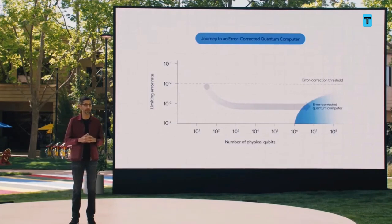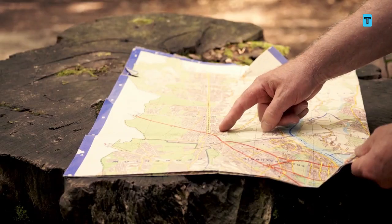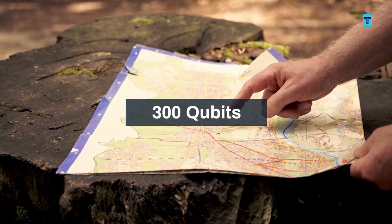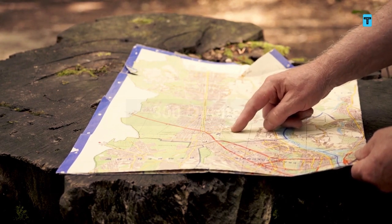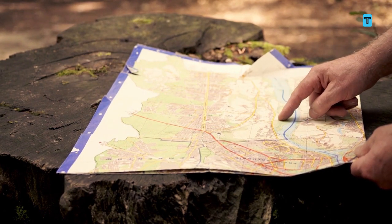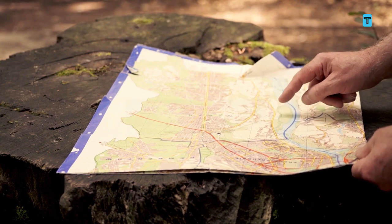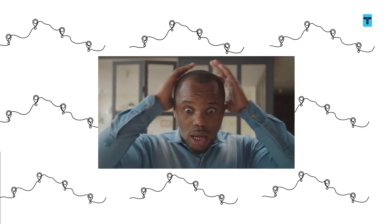Quantum error correction is theorized as essential to achieving fault-free quantum computing. So how long would a 300-qubit quantum computer take to solve the hiking problem presented earlier? Actually, around a few seconds — while it checks all the routes simultaneously. Sounds crazy, indeed.